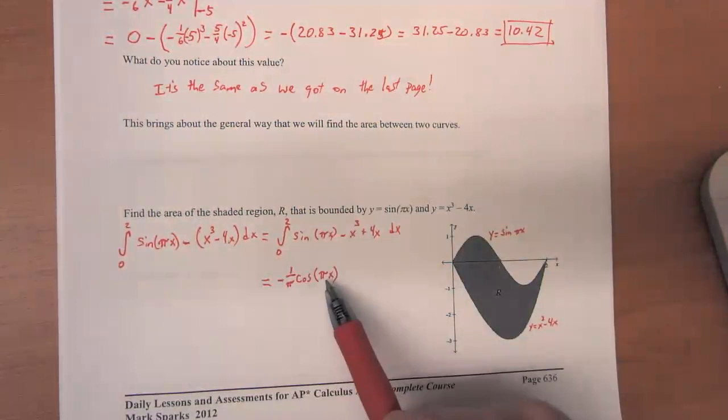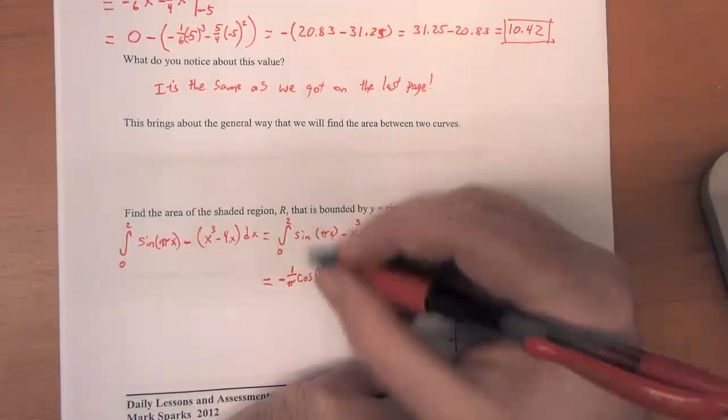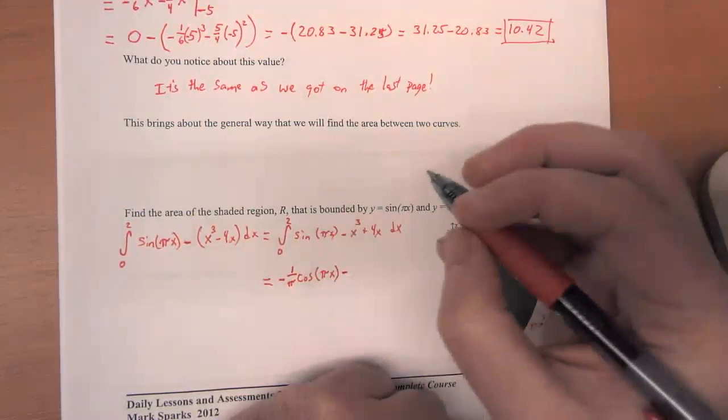And so the derivative of this is going to be sine of pi x. The negatives are going to cancel out times the derivative of pi x, which is pi. Those pi's in the numerator and denominator are going to cancel out and you're going to be left with that. So that's an important part about how to anti-differentiate complex functions like this.